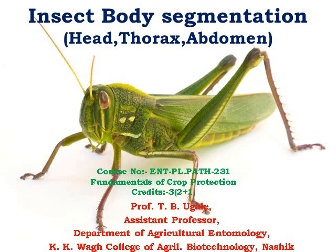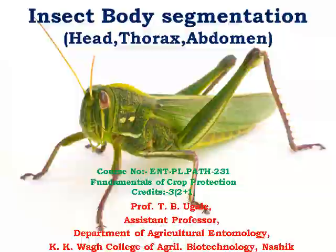It covers the description of the head, thorax, and abdomen. Head, thorax, and abdomen are the basic components of the insect body. The insect body is always segmented, having various functional structures like wings and legs. We will go through it one by one.